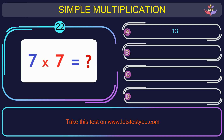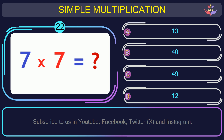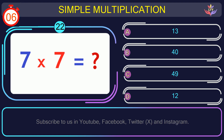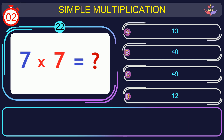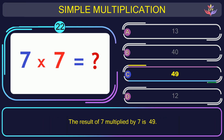Question number 22: calculate the result when you multiply 7 and 7. The correct answer is option C: 49. The result of 7 multiplied by 7 is 49.